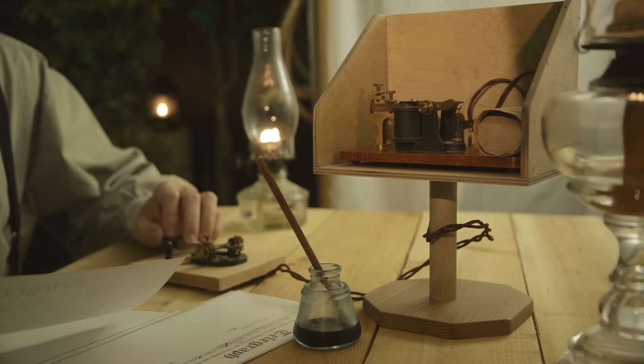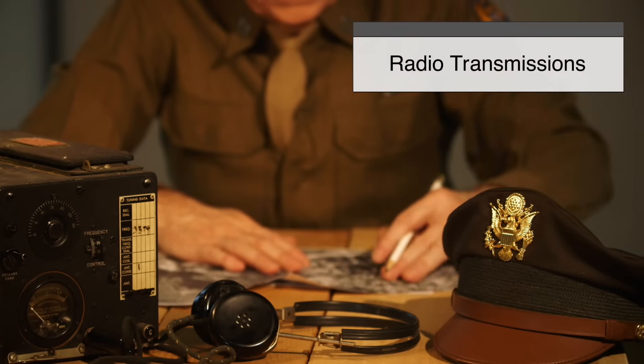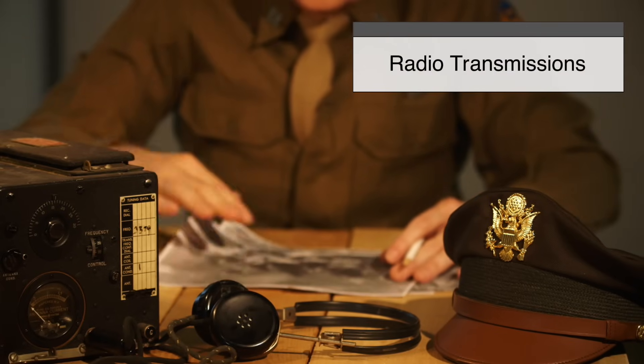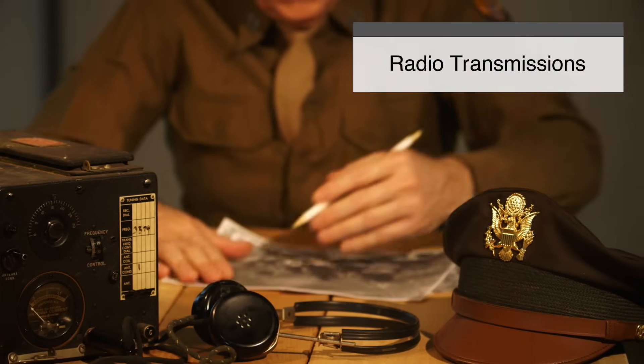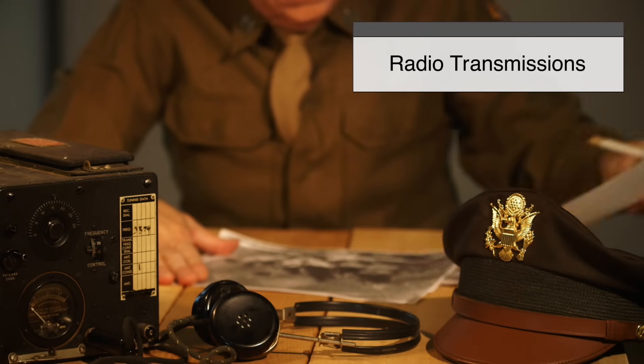Over time, Morse code expanded beyond the telegraph. It was used with signal lamps in the military, where flashes of light would represent the code. Ships and aircraft used radio transmissions to send and receive Morse code messages, which became a crucial part of emergency communication at sea.